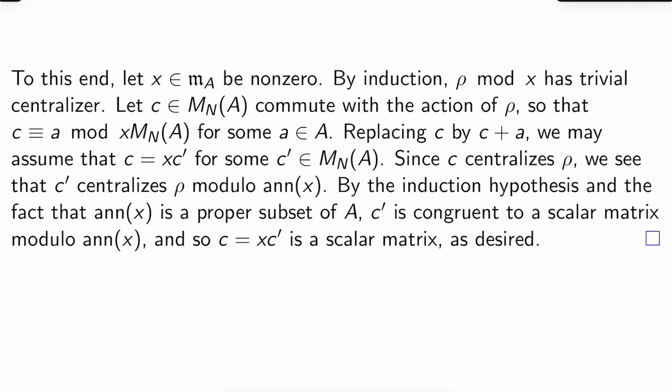Let C be an N by N matrix over A that commutes with the action of ρ. So a consequence of this, you can check easily, is just that C is equivalent to A mod X M_N(A) for some A in A.